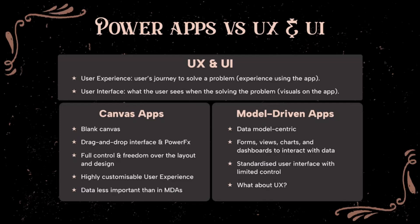As a quick intro for those who do not work directly with Power Apps or are not familiar with user experience, I want to explain the key concept. Many people think that UX and UI are the same, but that isn't correct. In simple terms, UX is about the user's journey to solve a problem, while UI is what the user sees when they are solving the problem — the app's visuals. When it comes to Power Apps, we have two types: Canvas apps, which offer full control over the layout and design and allow highly customized user experience; and model-driven apps, which focus more on data and provide a standard user interface with limited customization. But even with that limited UI customization, we still can do a few things to optimize the UX in model-driven apps.